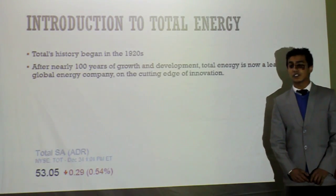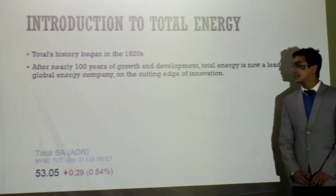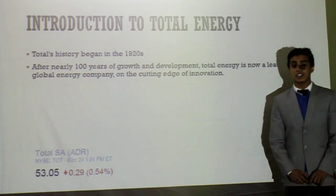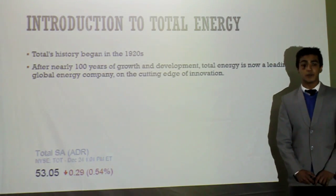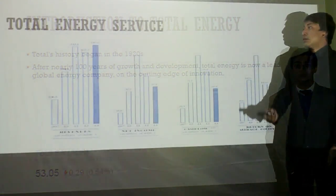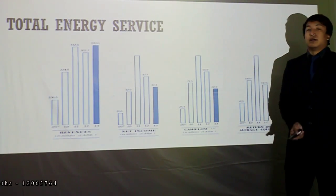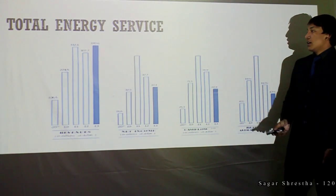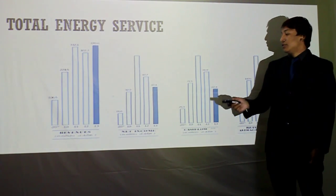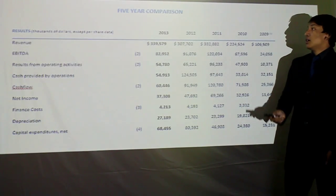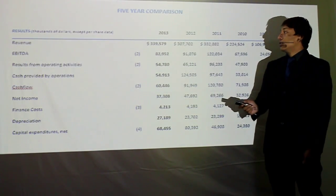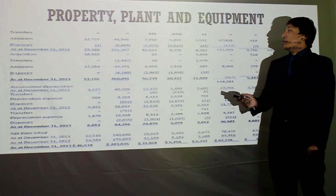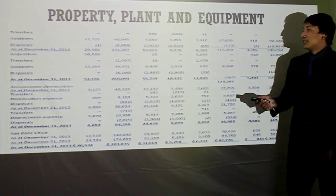Moving to our introduction of Total Energy: Total Energy's history began in the 1920s, and after 100 years of growth and development, Total Energy became a global energy company on the cutting edge of innovation. Total Energy Services' bar chart covers revenue, net income, cash flow, return and equity. The revenue increased in 2013 whereas the net income decreased in 2013. The 5-year comparison of revenue in 2013 is $739,000.